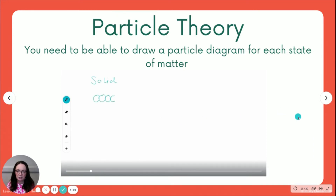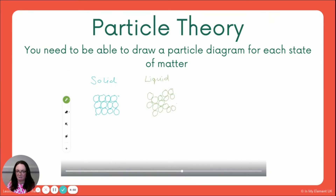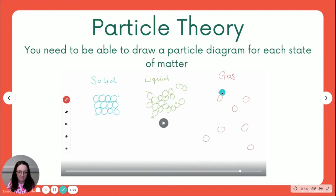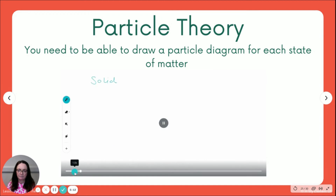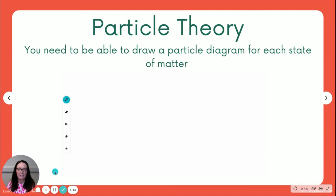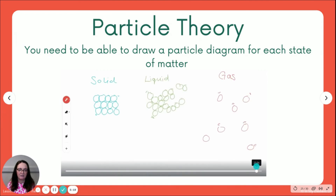So in this video you're going to draw the solid — look, I'm drawing the regular arrangement with vibration lines. Then we go on to the liquid: again they're touching, in an irregular arrangement, with a couple of movement lines. Then the gas — they're all spaced out, with a couple of movement lines. They're not perfectly drawn circles and they don't have to be. You can clearly see one is a solid, one is a liquid, one is a gas. You need to be able to draw that, and you will need to draw that on your worksheet as well.